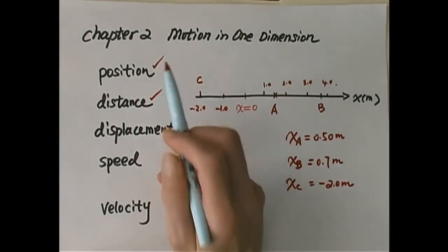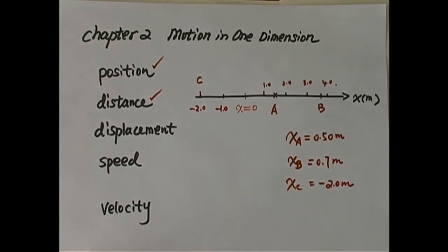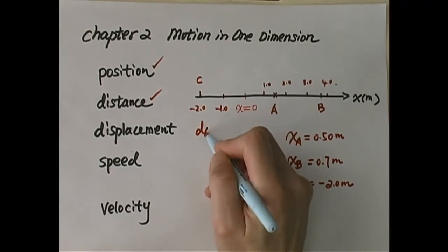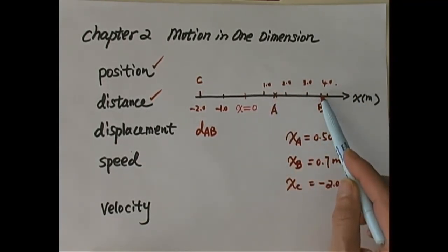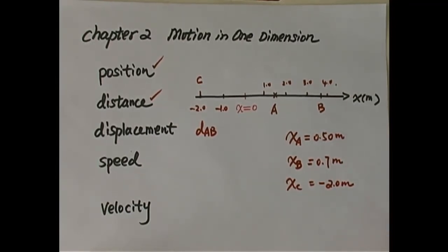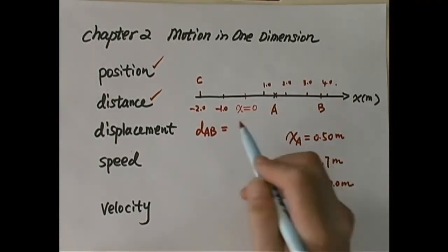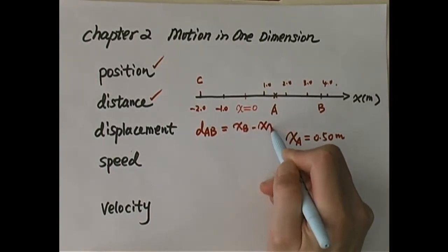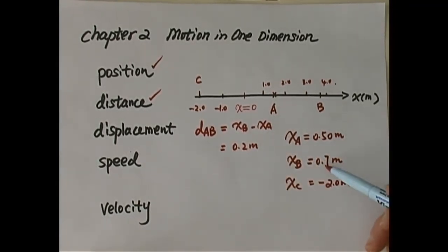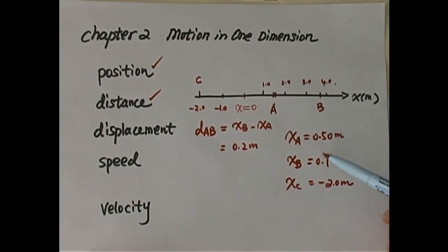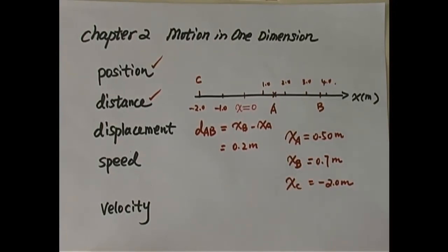Next, we need to define distance. Distance is defined as how much total path something has traveled. If we ask for the distance from A to B, we count: A is at 0.50 meters and B is at 0.7 meters, so the difference is around 0.2 meters. D of AB equals final position xB minus initial position xA, giving us 0.2 meters. When using significant figures for addition and subtraction, we line up the decimal: 0.7 minus 0.5 gives 0.2, since 7 is estimated to one significant figure.